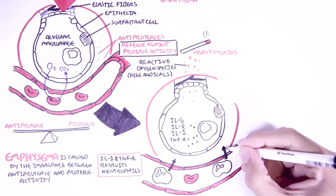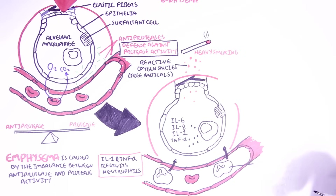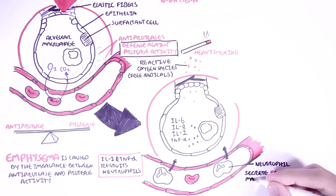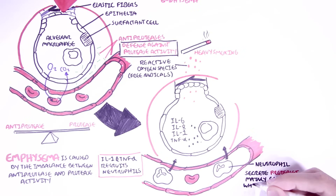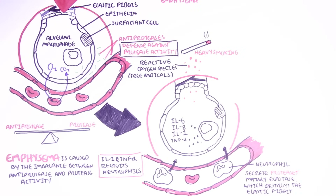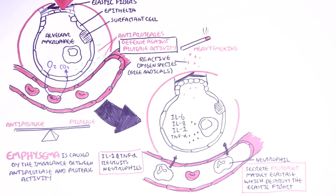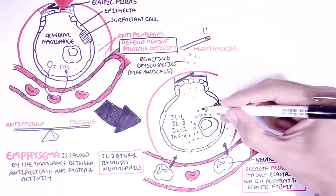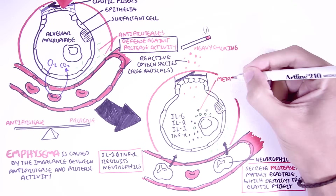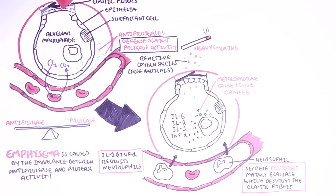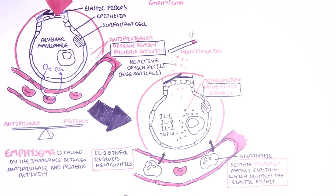More neutrophils come into the area, and they begin secreting proteases — mainly elastase — which will begin destroying the elastic fibers. Not only this, but the macrophage also secretes other chemicals such as metalloproteases, which is another type of protease that causes damage to the tissues. So there are all these chemicals being secreted from immune cells — neutrophils and macrophages — which will essentially aggravate the area and cause damage to the surrounding tissue.